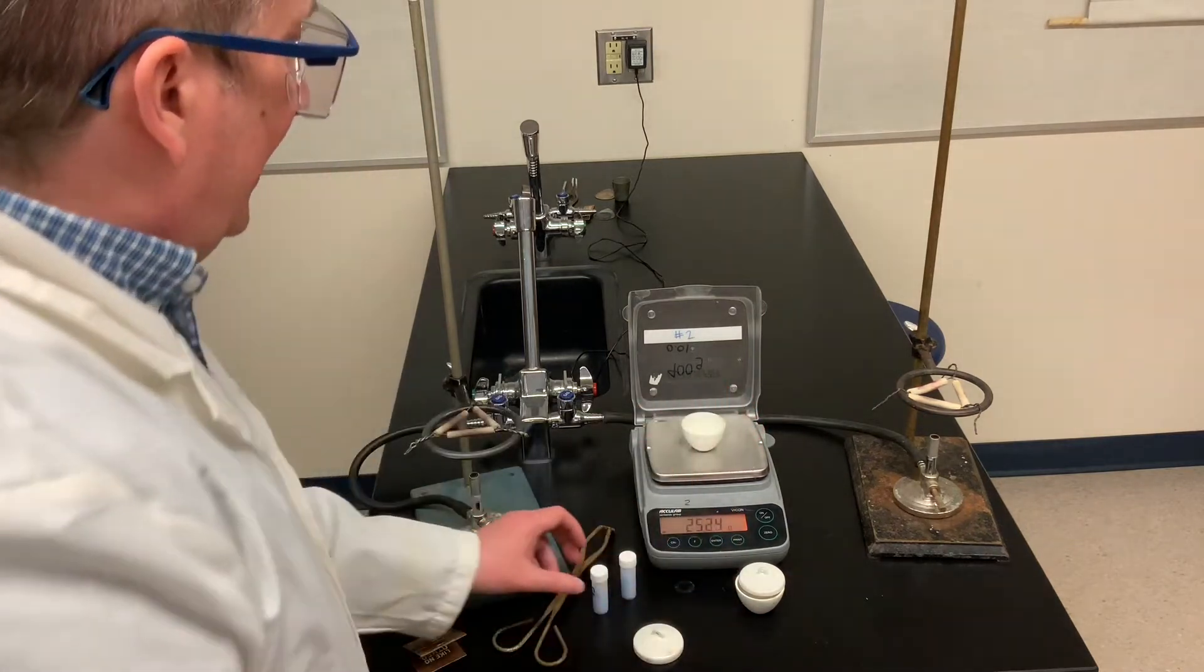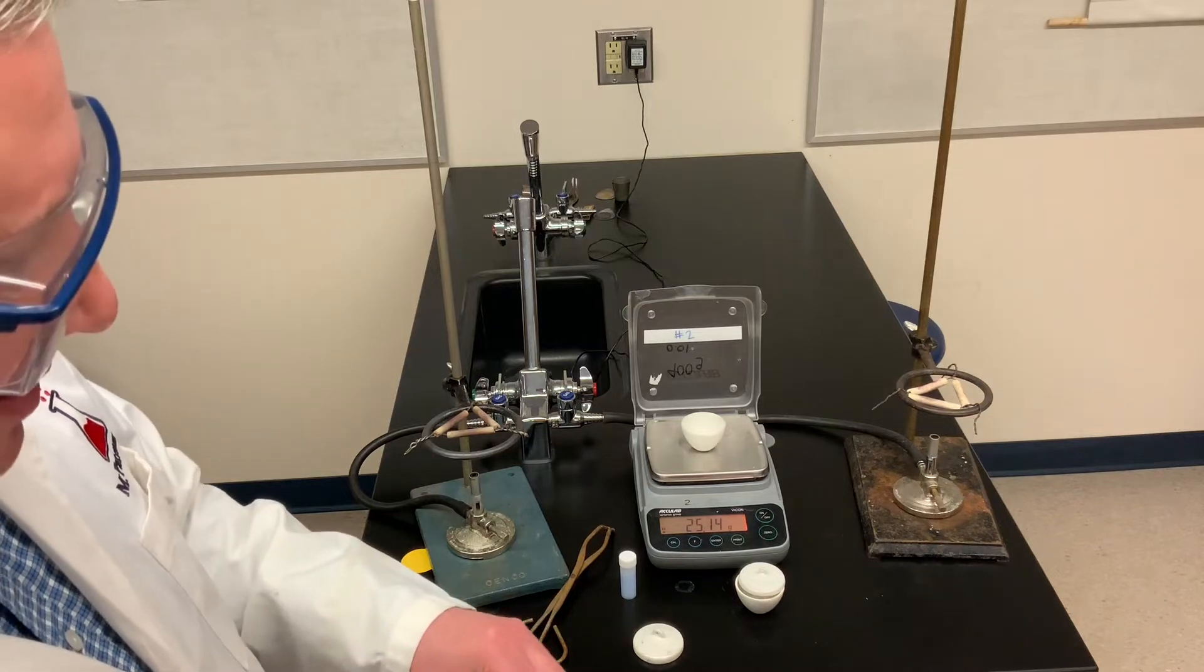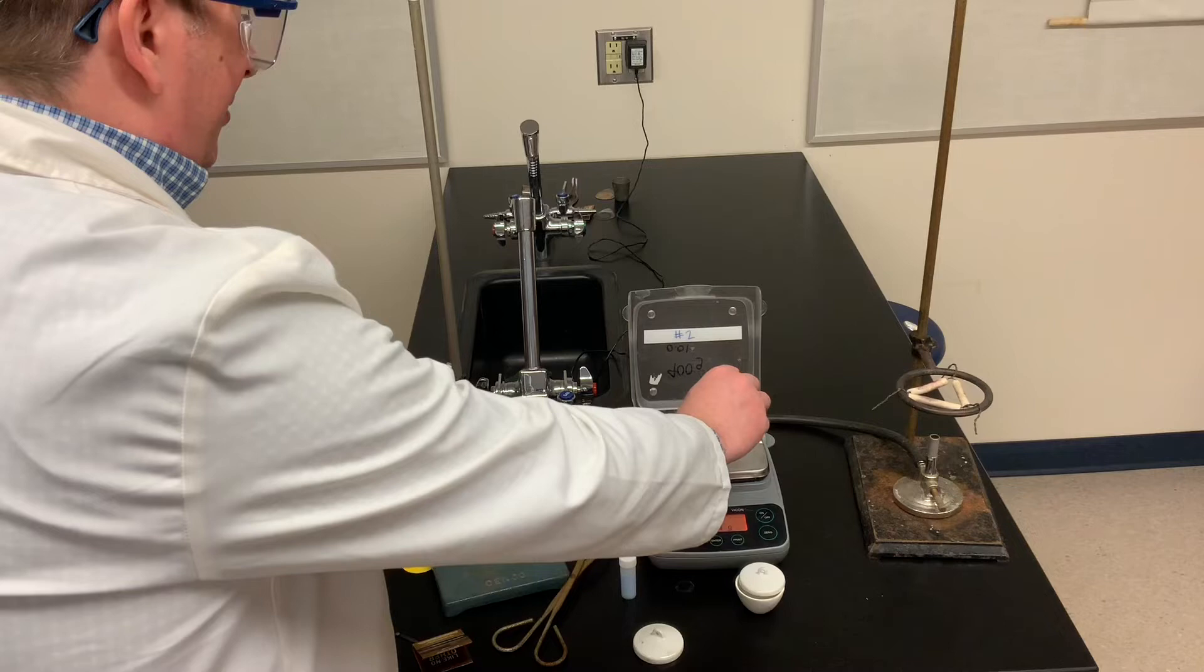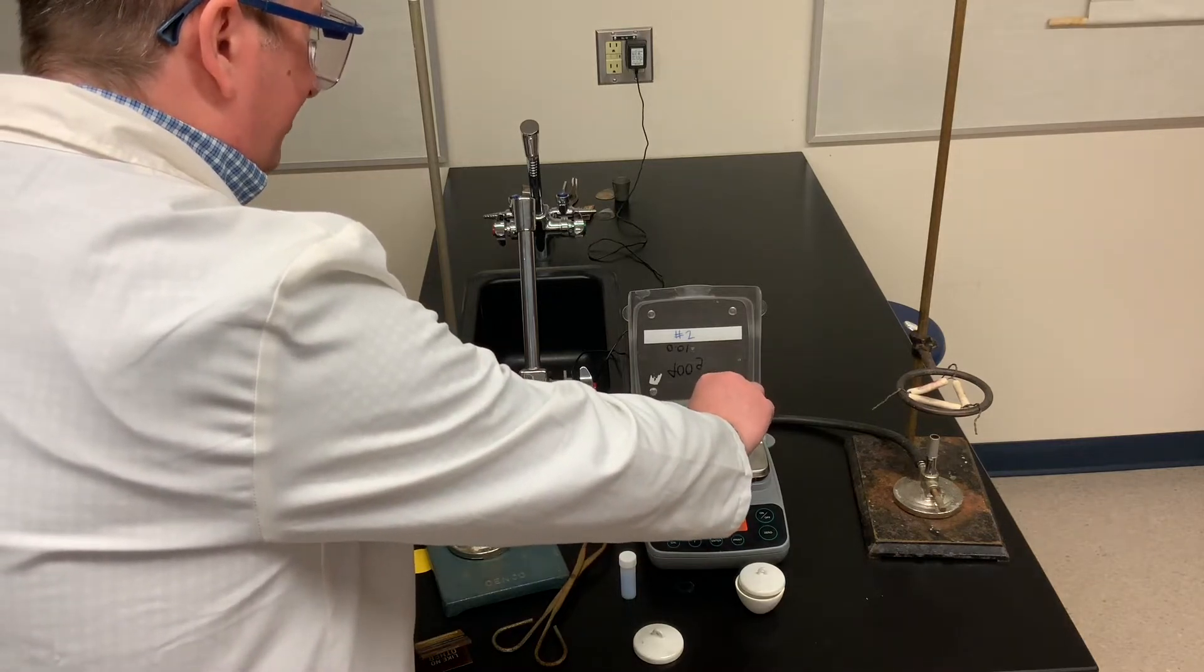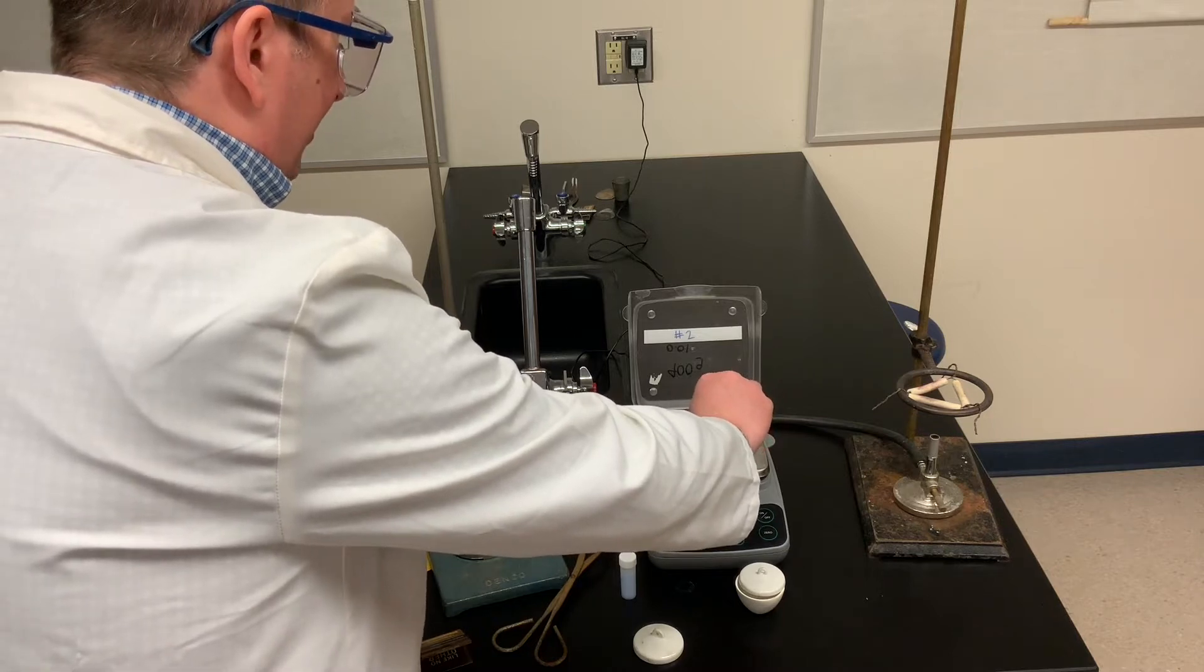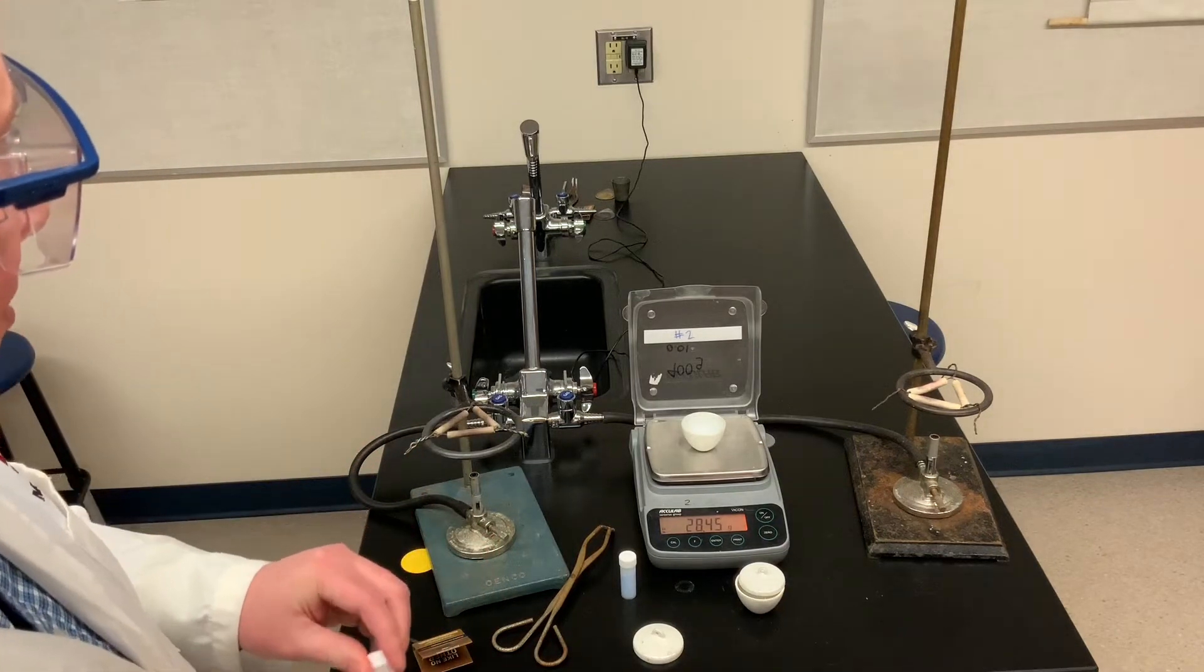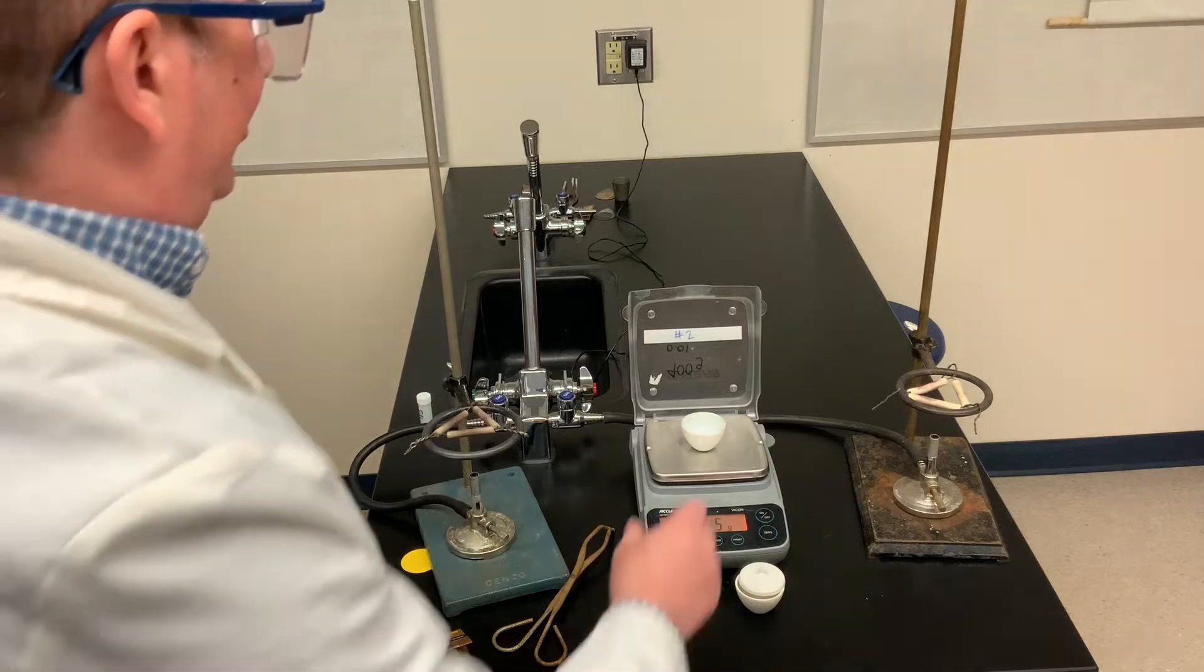So you can record the mass of the first crucible. Now I'm going to take some of my copper sulfate salt. I'm going to add that to the crucible and you're going to record the mass of the salt after I've added it. So you want to record that mass of the crucible with the hydrated salt.